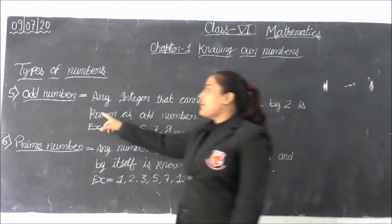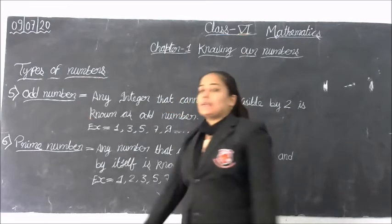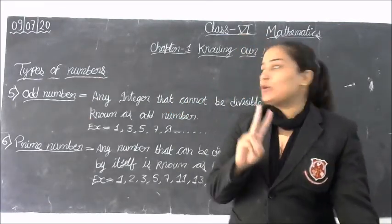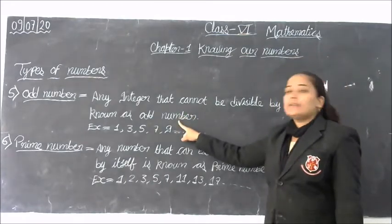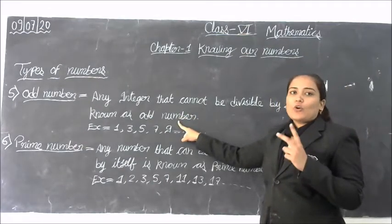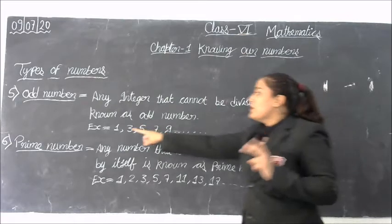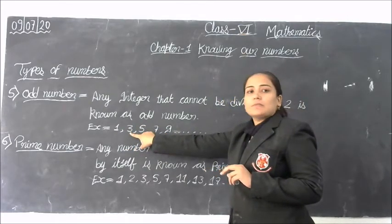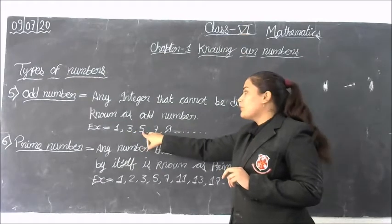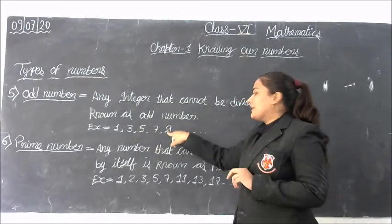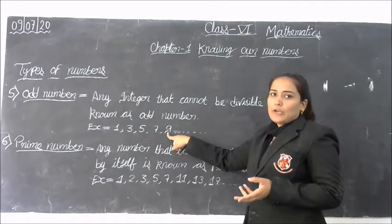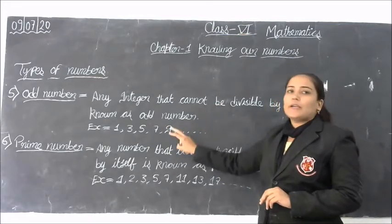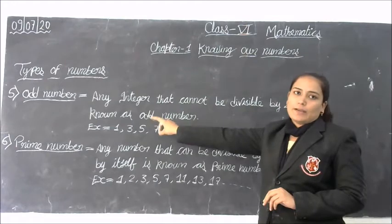Next, the fifth definition: odd numbers. Any integer that cannot be divisible by 2 is known as an odd number. The difference from even numbers is that even numbers are divisible by 2, but odd numbers cannot be divisible by 2. Any number that cannot be divisible by 2 is an odd number.